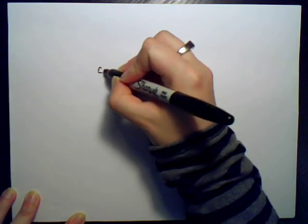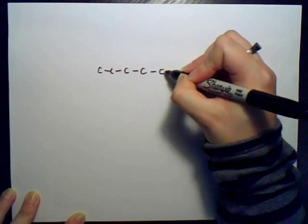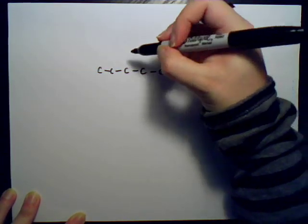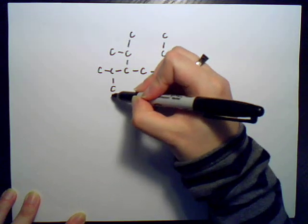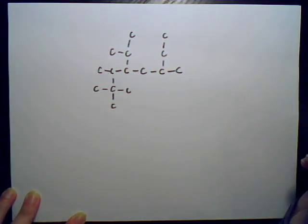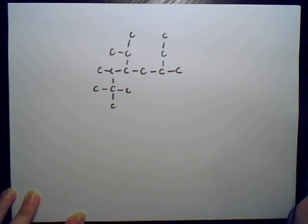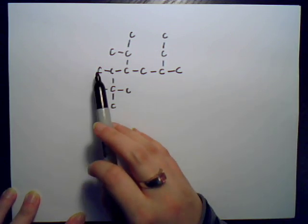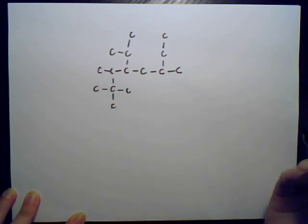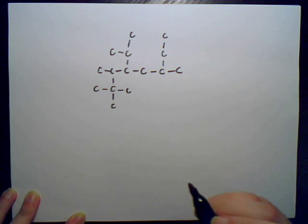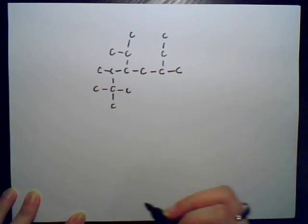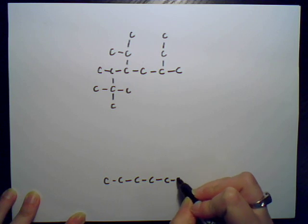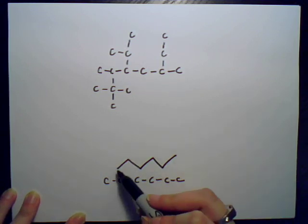Let me draw a carbon-carbon molecule for you. The first step when trying to name our molecule — we might start by counting across: one, two, three, four, five, six. A six-carbon molecule would just be hexane.